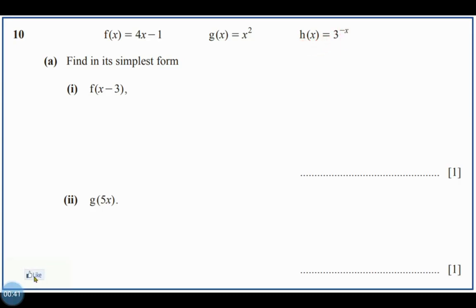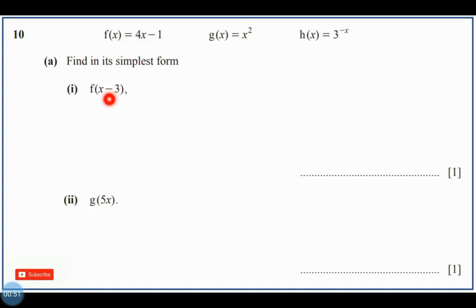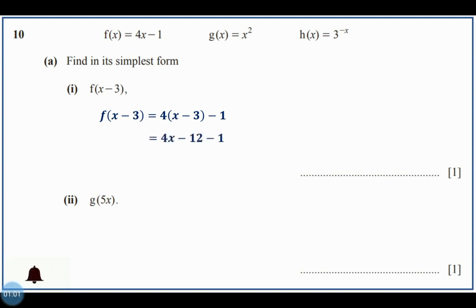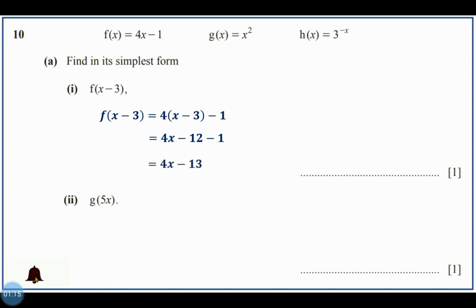The first question is f(x minus 3). I will take the function F and change the value of x with x minus 3. So it becomes 4 times the quantity of (x minus 3) minus 1. Expanding: 4 times x is 4x, 4 times negative 3 is negative 12, then minus 1. Negative 12 minus 1 is negative 13. So our final answer is 4x minus 13.